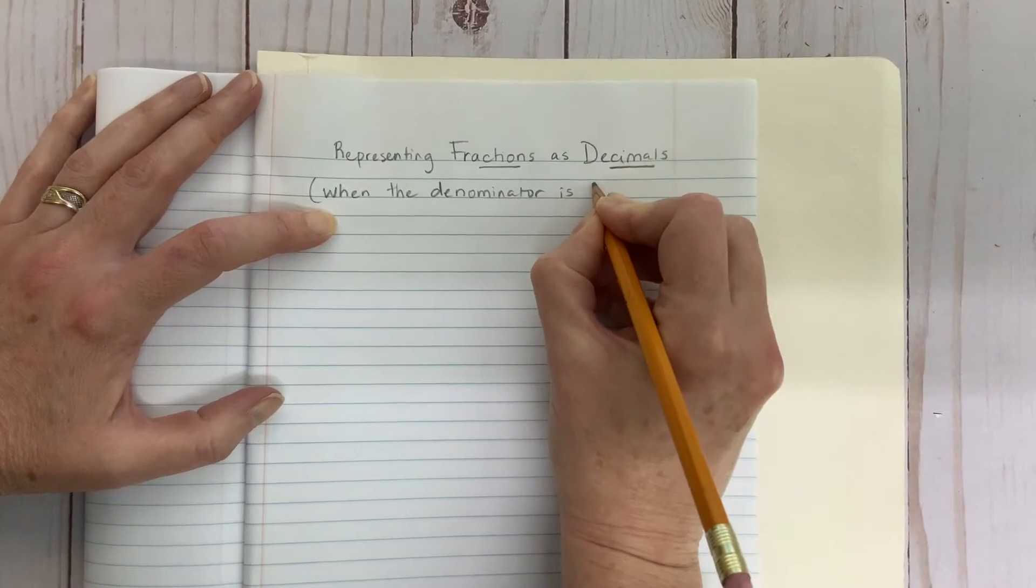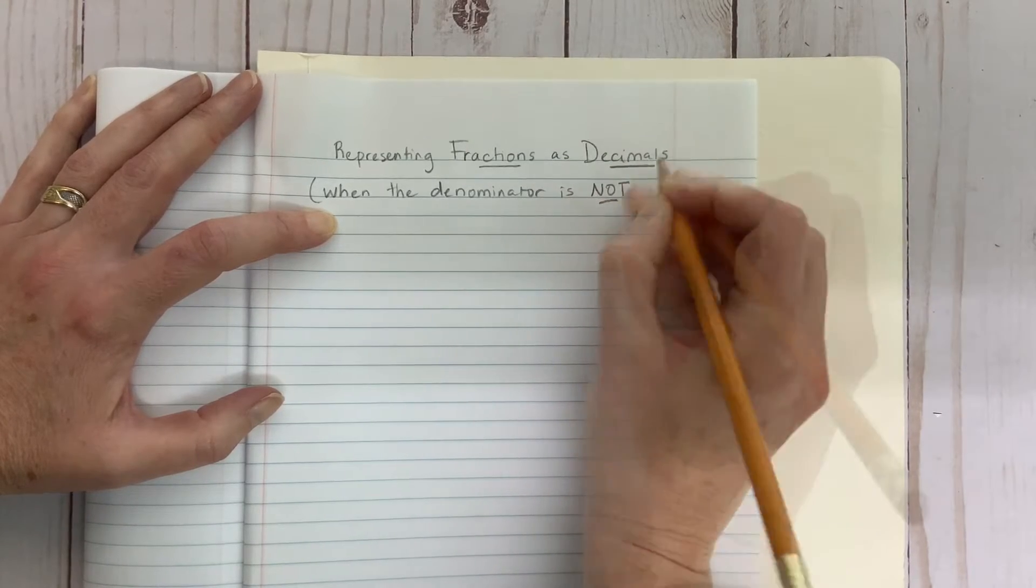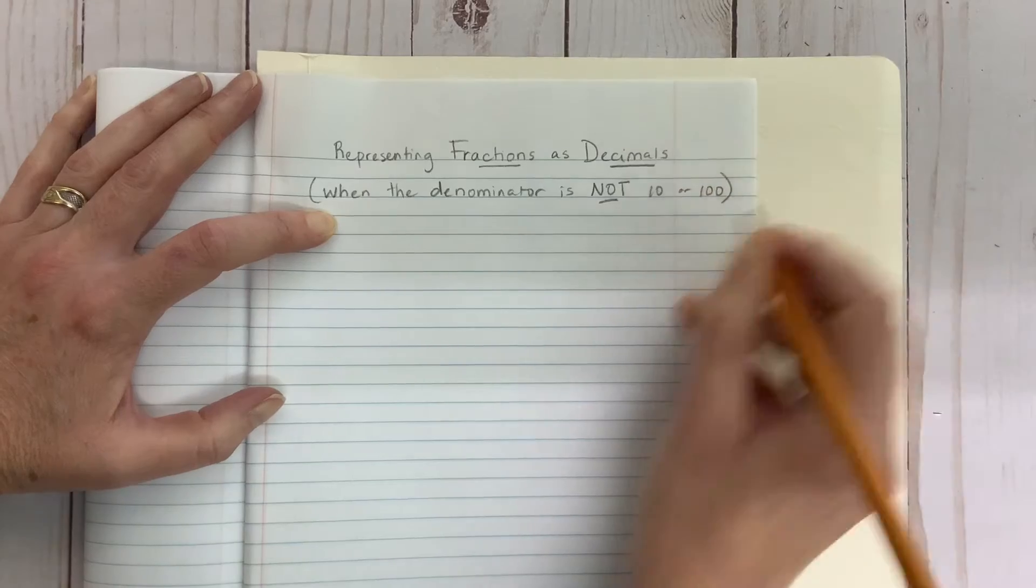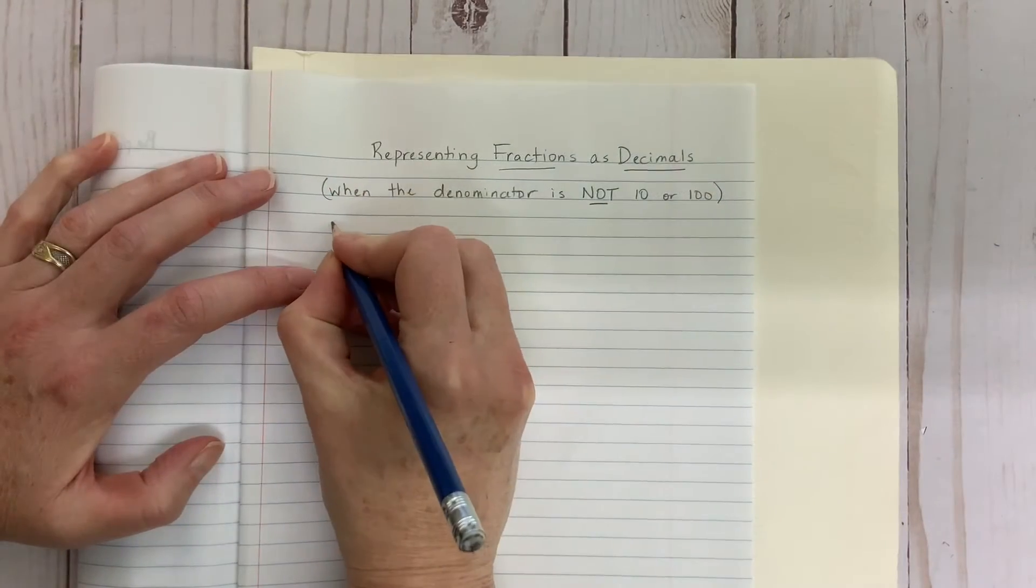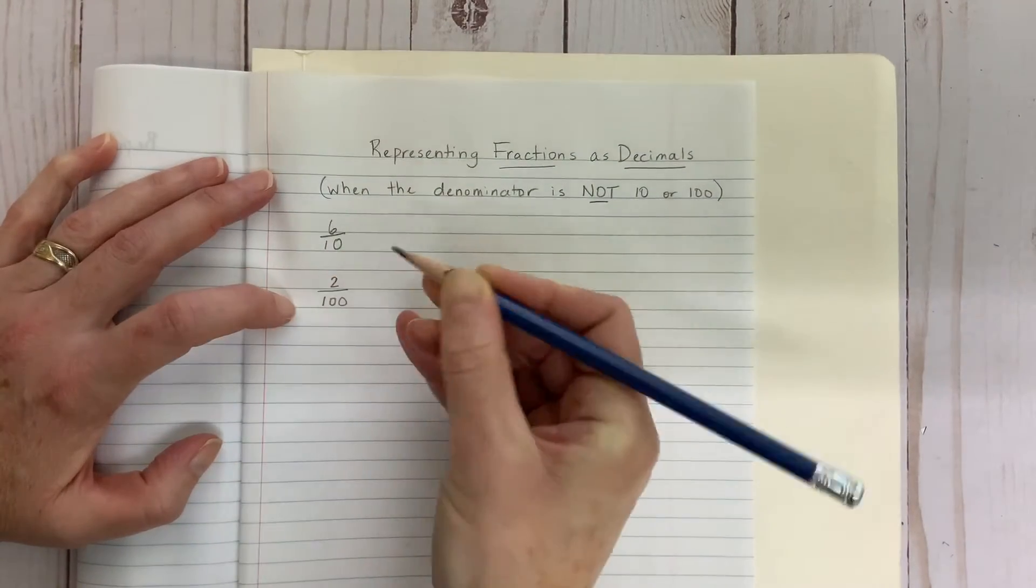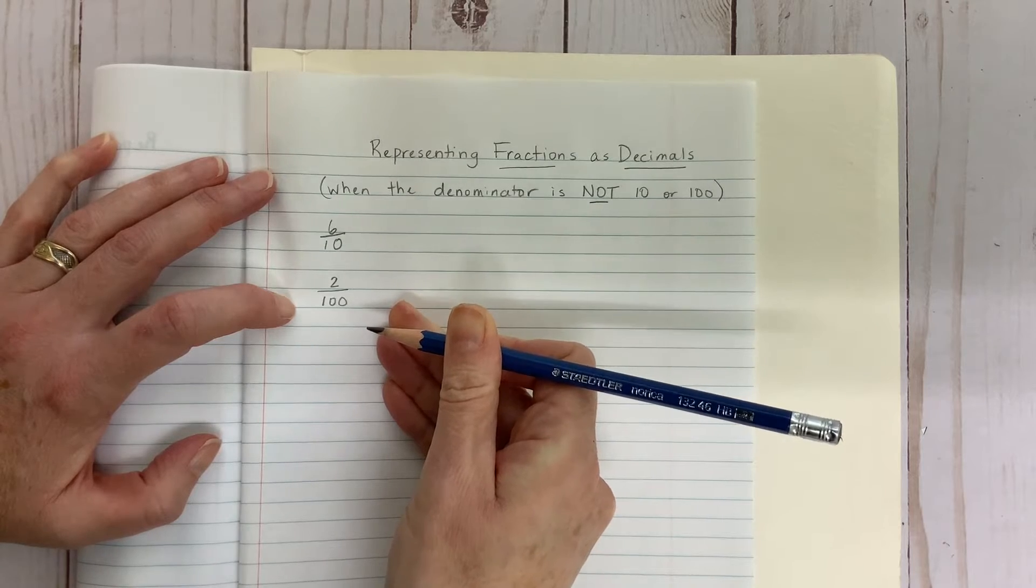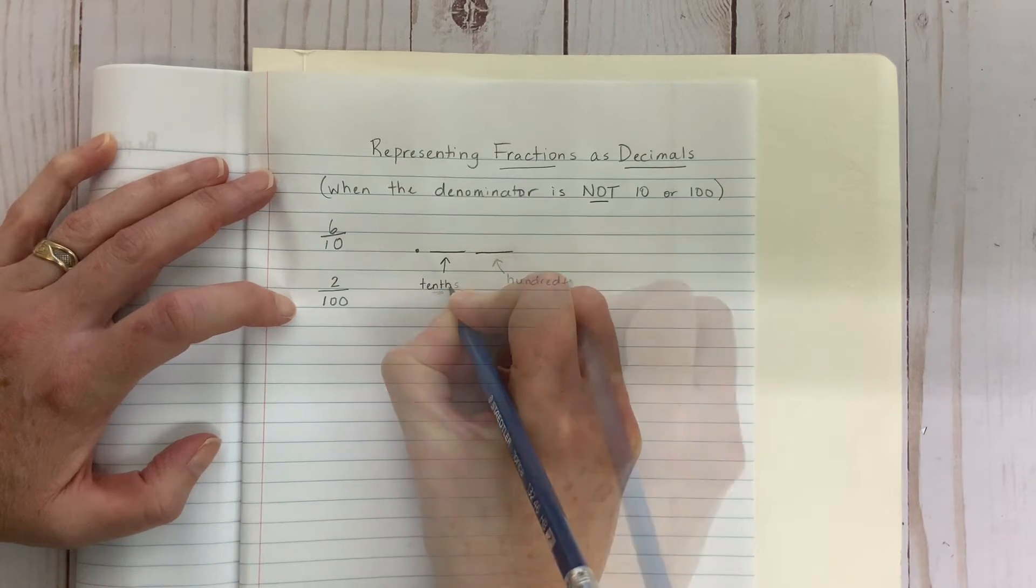Today, we're going to look at fractions with denominators that are not 10 or 100. If you can recall, fractions that have denominators of 10 or 100 have their own special places, the tenths place and the hundredths place.